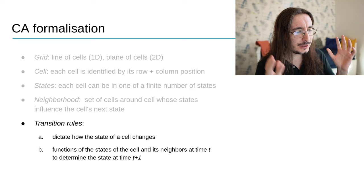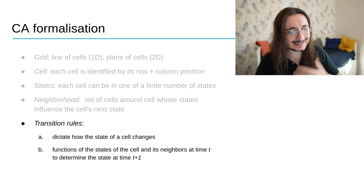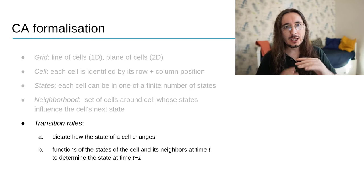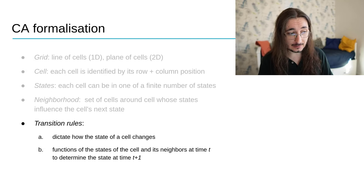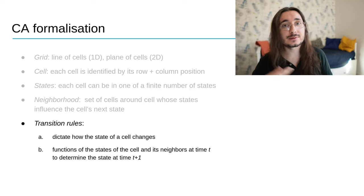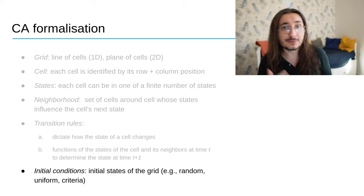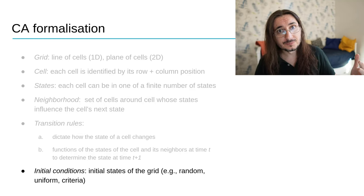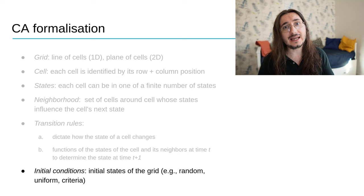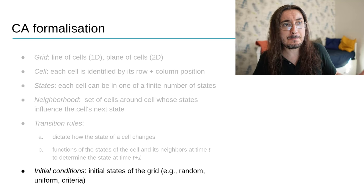Then we have something that's extremely important, that is transition rules. What are these? Well, we use rules that dictate how the state of a cell changes. And these rules are functions of both the state of the cell and the state of its neighbors. Finally, we have initial conditions. And that is just the initial state arrangement in the grid. We can initiate a cellular automaton in different ways. For example, by randomly initiating it or using a uniform distribution of some criteria.